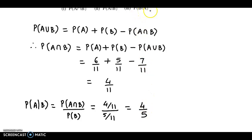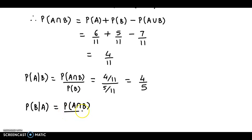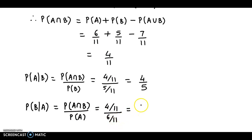Next, probability of B given A. Probability of B given A can be obtained as probability of A intersection B upon probability of A. Probability of A intersection B is 4 by 11, and probability of A is 6 by 11. We simplify this: we have 4 by 6. Further reducing, 2 twos are 4 and 2 threes are 6, so the final value is 2 by 3.